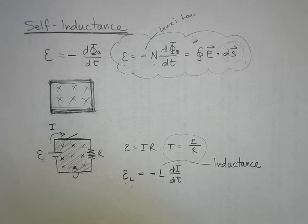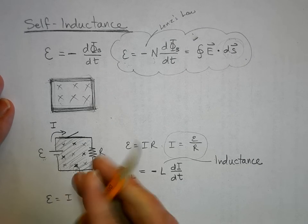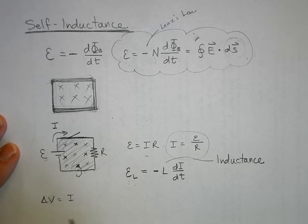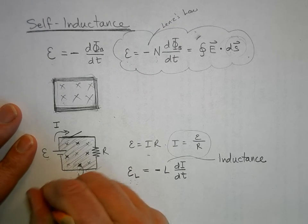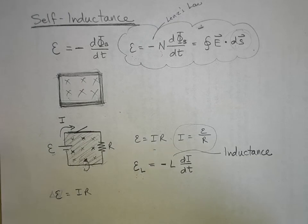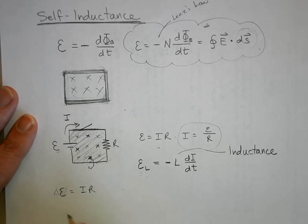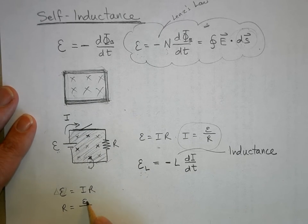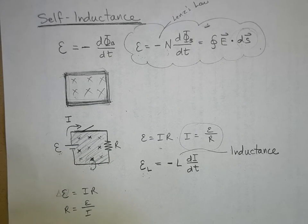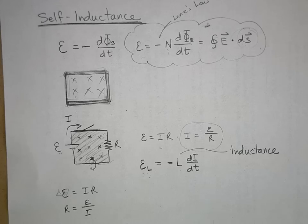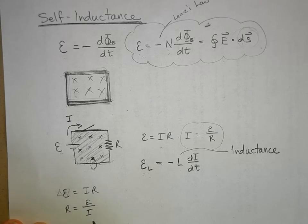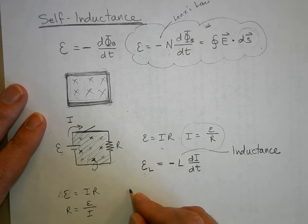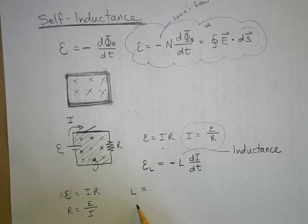Compare this to Ohm's law: ΔV = IR tells you how many volts you need per amp of current. The inductance L = E_L / (di/dt) is analogous: it's how many volts of back EMF the circuit generates per amp per second of current change. The back EMF is a backwards voltage that slows the rise of current, forcing the circuit to take its time reaching maximum current.